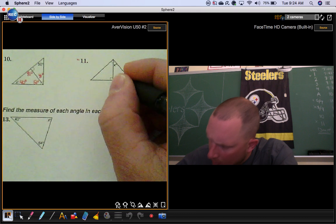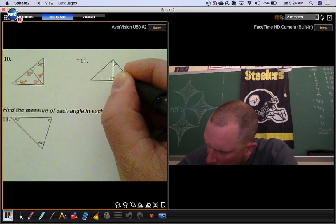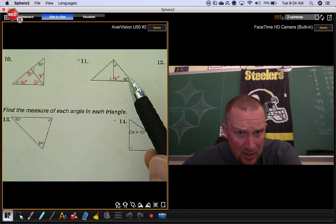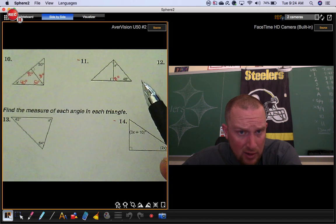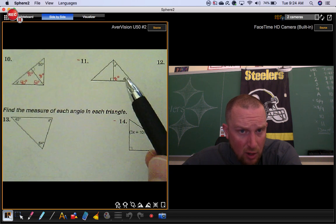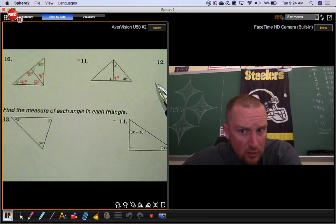Same thing's going to happen over here. You have perpendicular lines so that's going to be a 90 degree angle. If that's 90 and that's 48, then this angle right here is going to be the complement of that 48. So it's going to be 42.